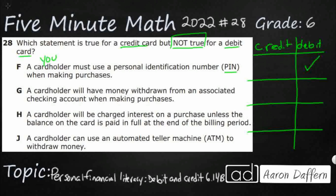You actually don't need a PIN for your credit card, because when you pay with a credit card, you're not actually paying the store. If you go into Walmart and pay with a credit card, the credit card is paying Walmart, and then you pay the credit card back. So it doesn't come straight from your checking account. We want a statement true for credit and not true for debit — that's actually reversed here, so the answer is not F.